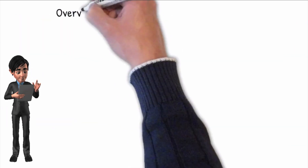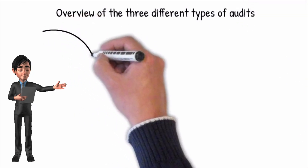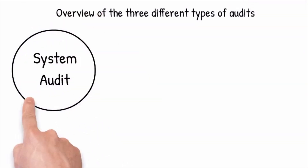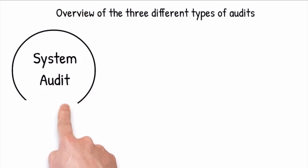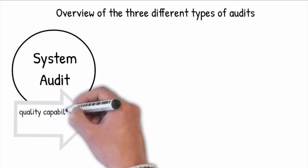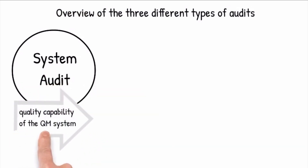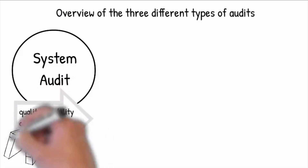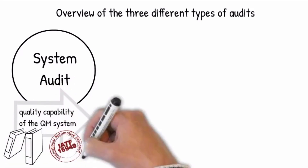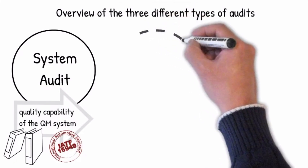We will now briefly summarize an overview of the three different types of audits. The system audit focuses on the comprehensiveness and effectiveness of the fundamental procedures against a specified management standard and customer-specific requirements to determine the quality capability of the QM system.